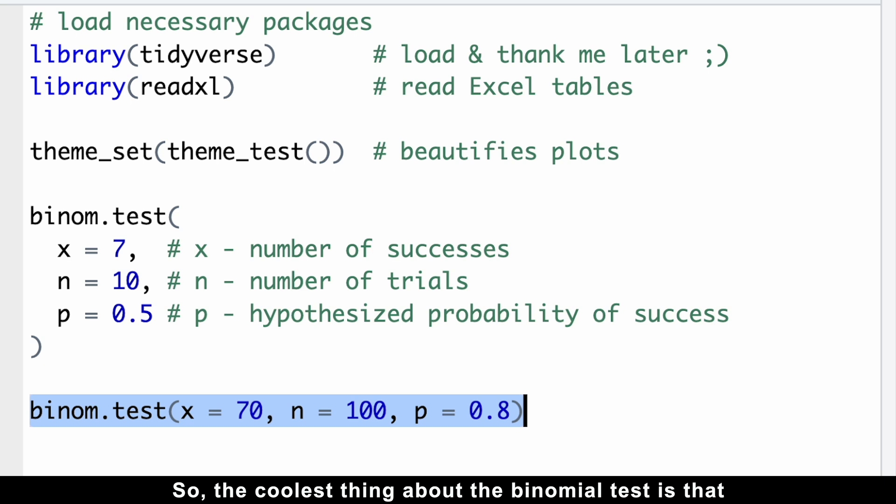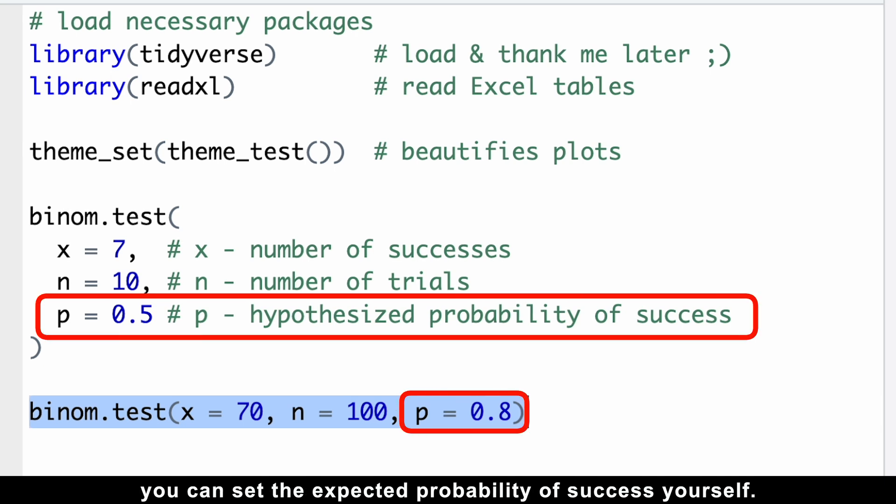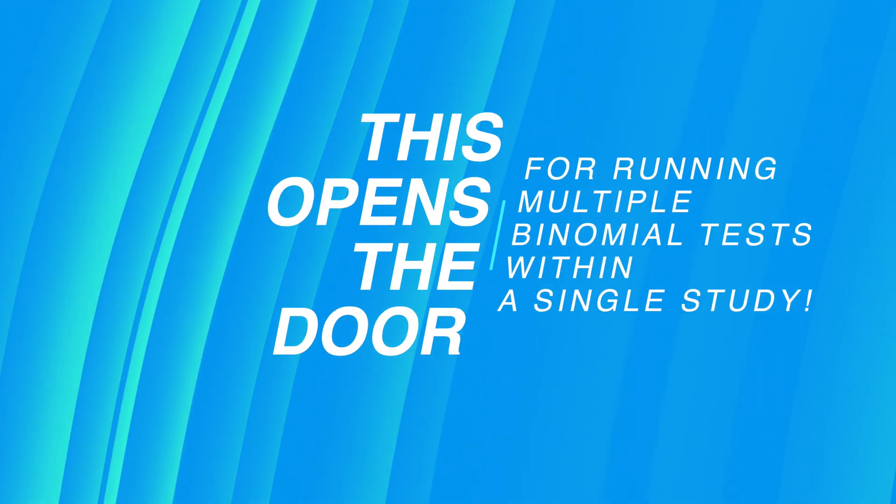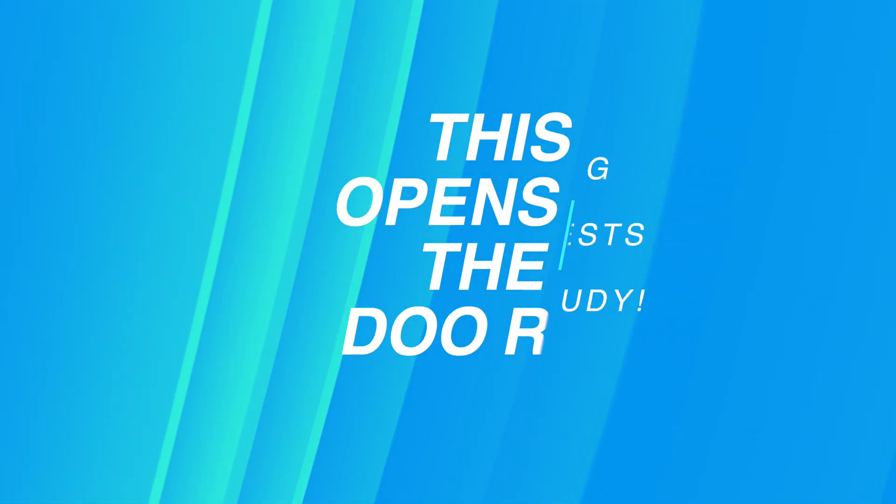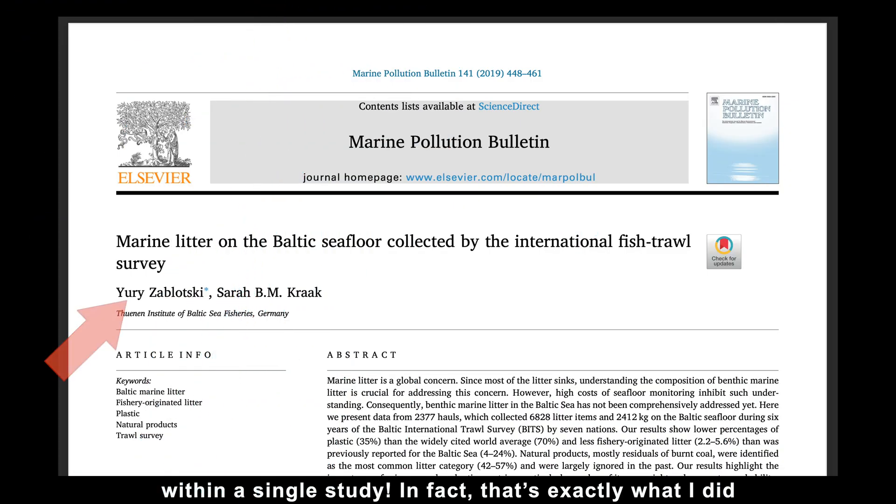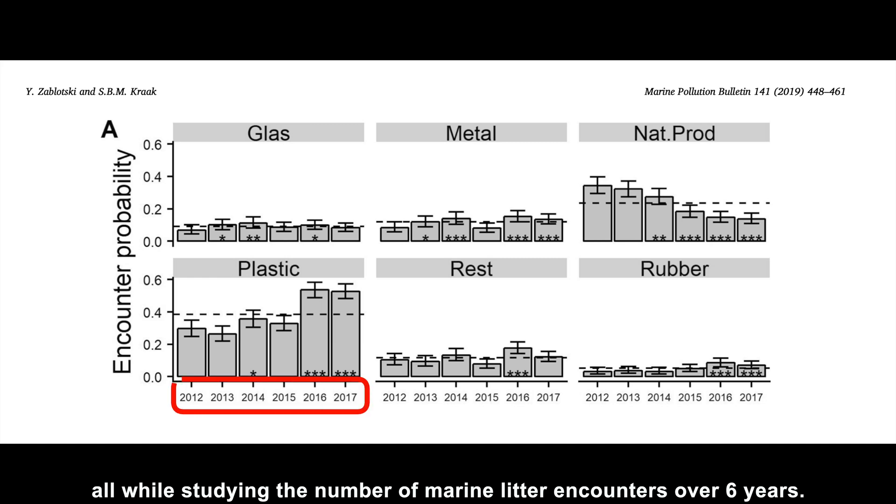So the coolest thing about the binomial test is that you can set the expected probability of success yourself. This opens the door for running multiple binomial tests within a single study. In fact, that's exactly what I did in a paper I published in 2019. I used multiple binomial tests to tackle two different hypotheses, all while studying the number of marine litter encounters over six years.